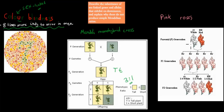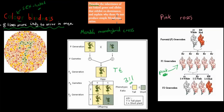Here we have a white rose crossed with a red rose, and what we get is the F1 generation, which is pink. With Mendel genetics, that should have been just either white or red — whichever one was dominant. So that's a bit odd. The dot point says: describe the inheritance of sex-linked genes and alleles that exhibit co-dominance, and explain why these do not produce simple Mendelian ratios. So we're going to describe how sex-linked genes work, for example with colorblindness, and how co-dominance works — when a red rose and a white rose are crossed to produce pink roses — and why that doesn't follow the usual Mendelian ratios.